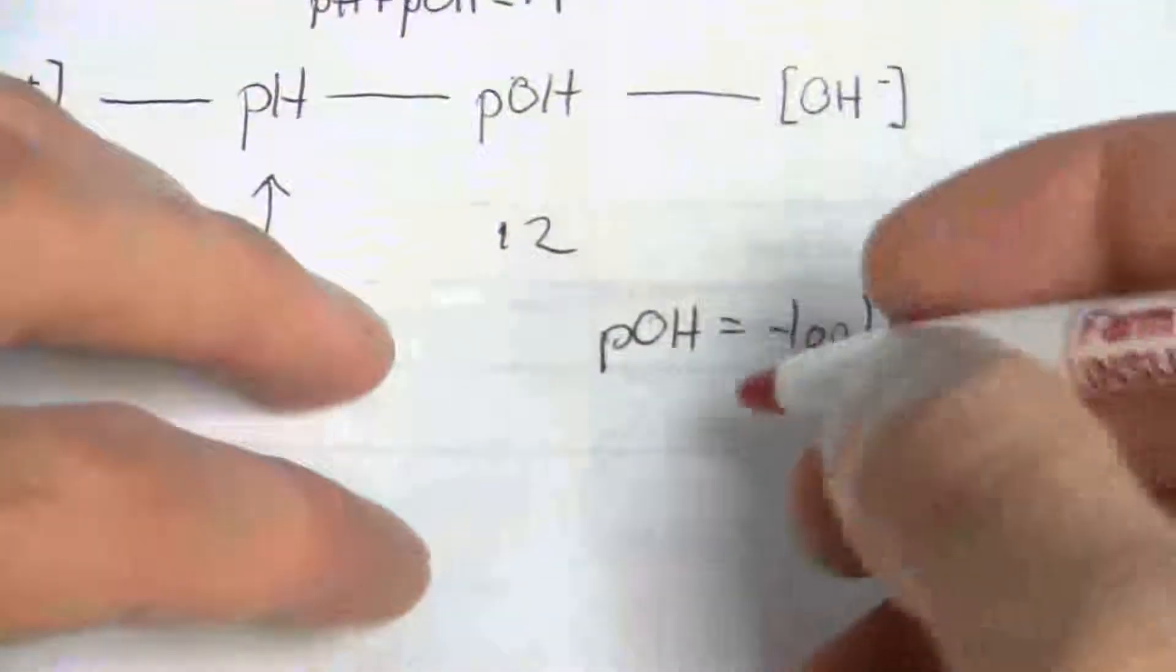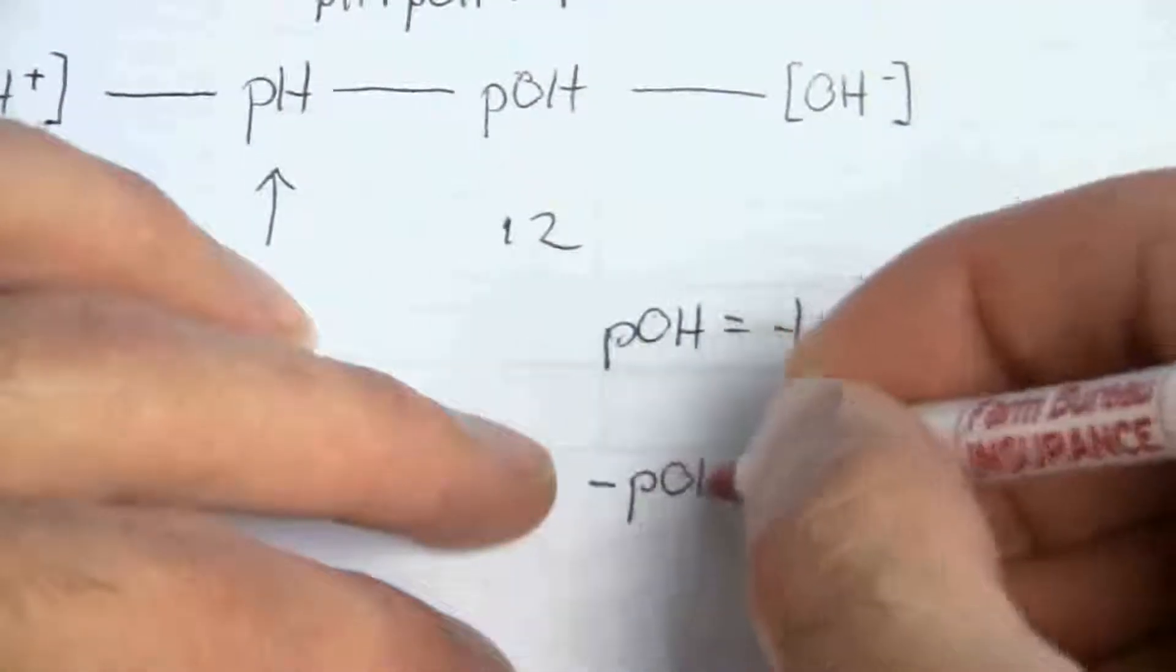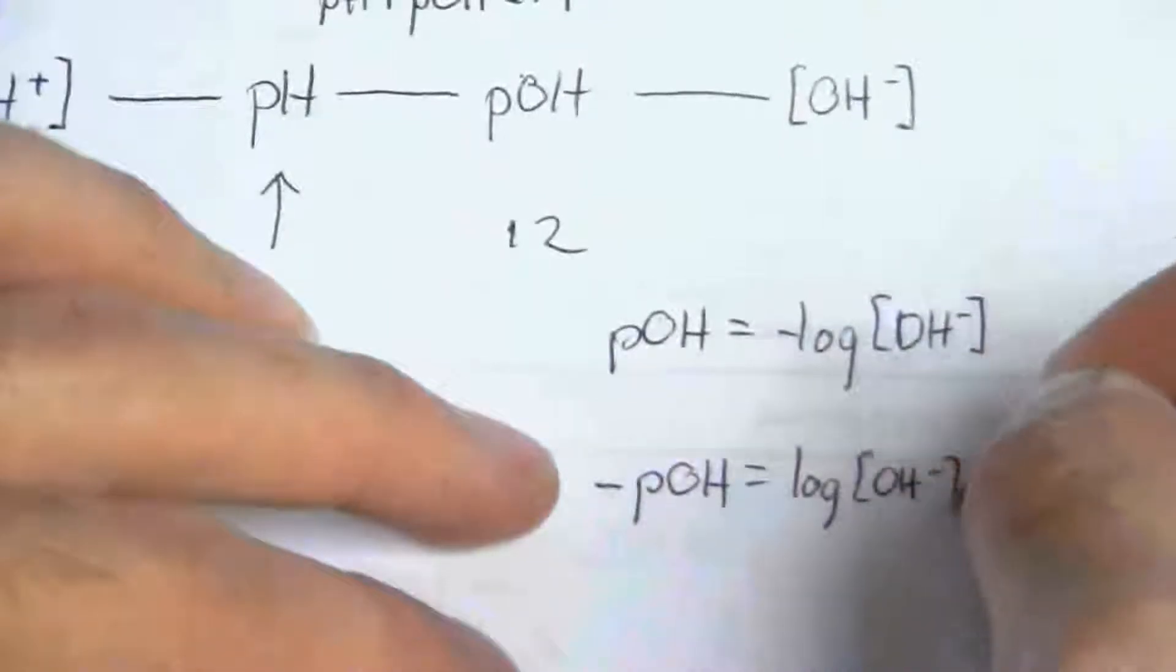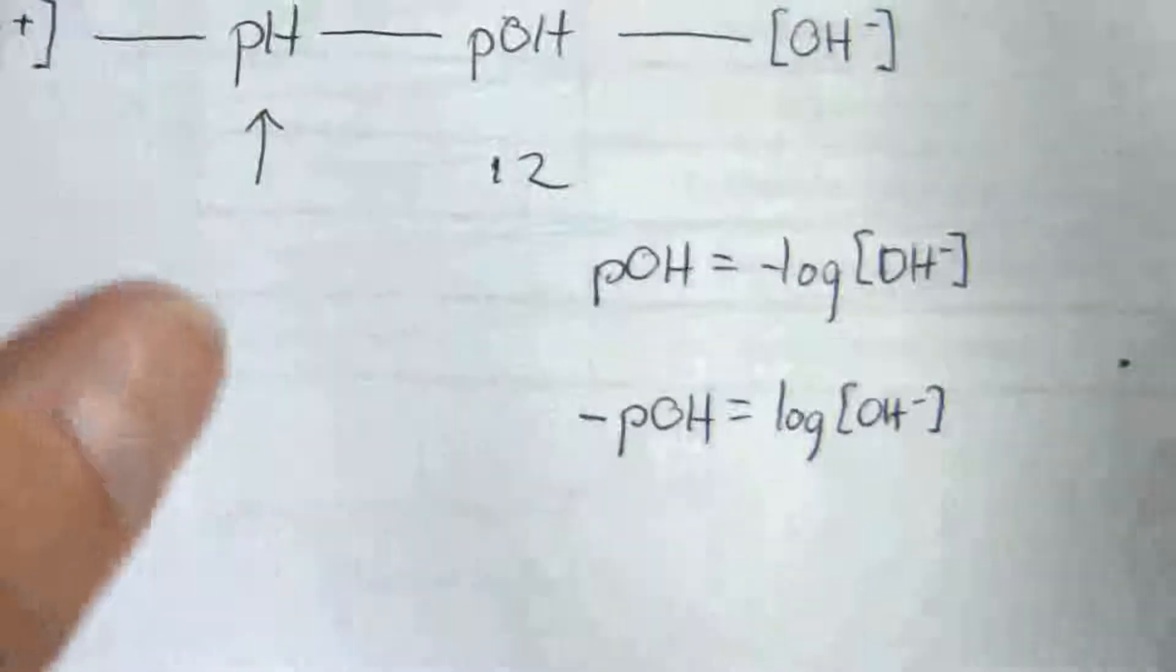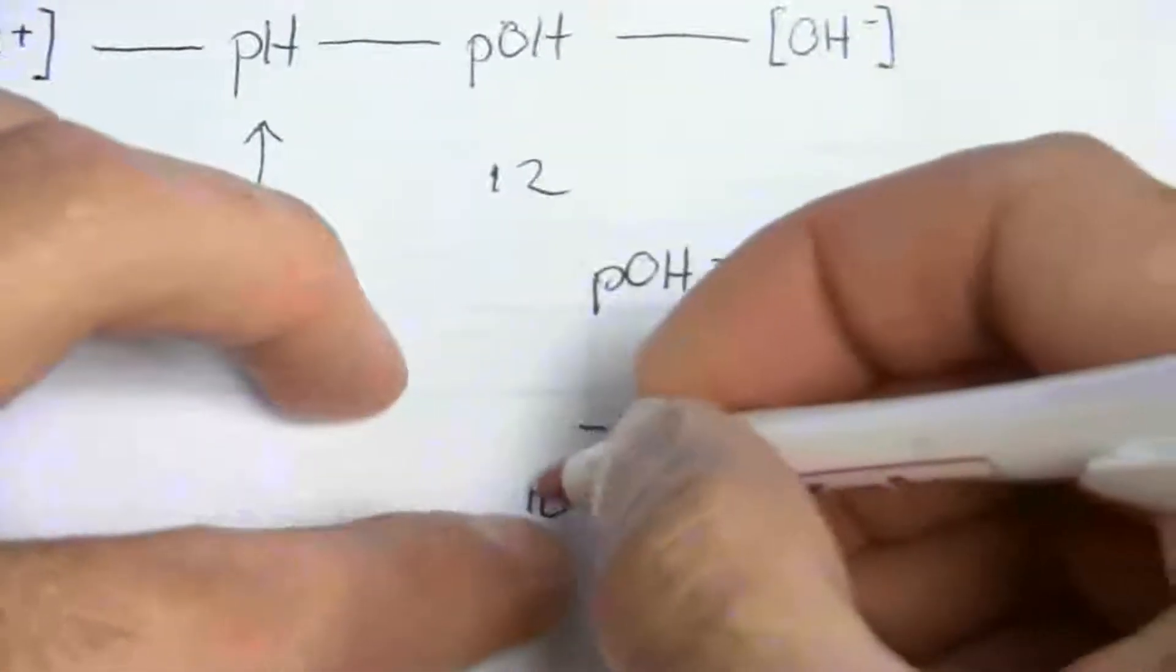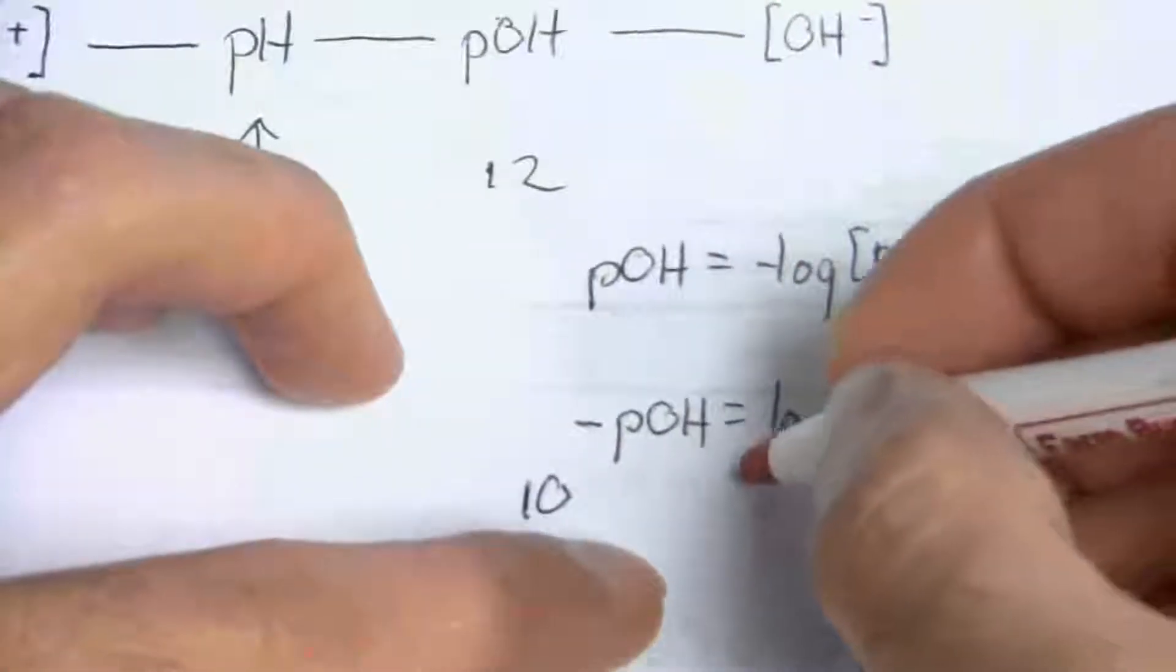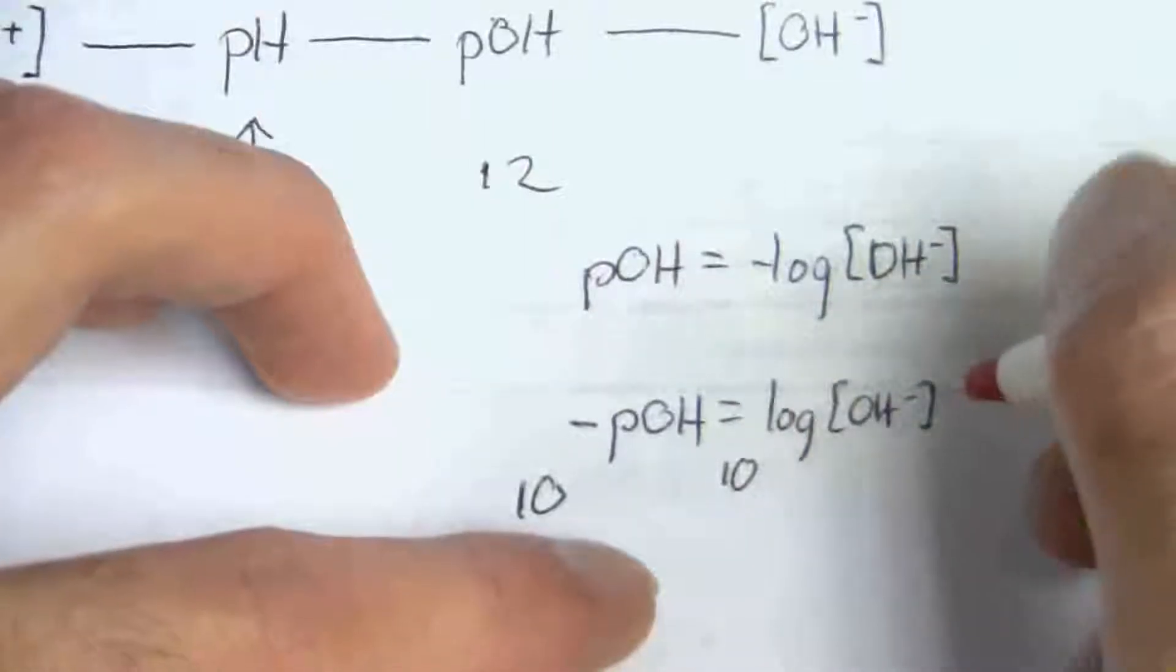So first, we're going to move that negative over, and it'll be negative pOH is the log of OH minus. Now I need to get rid of that log, and the way I do that is I take 10 to the power of both sides. So 10 to the minus pOH equals 10 to the log of the hydroxide ion concentration.